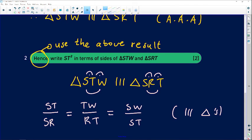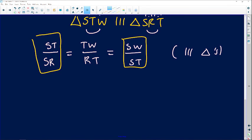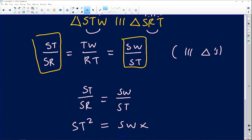And then they wanted ST². Where will ST² come from? It will come when you compare this ratio with this ratio there. If you compare those two, you'll get what you're looking for. So I'm going to say ST over SR is SW over ST. If you cross multiply, your ST² comes out as SW multiplied by SR. Very powerful question indeed. Thank you for sending us that question.